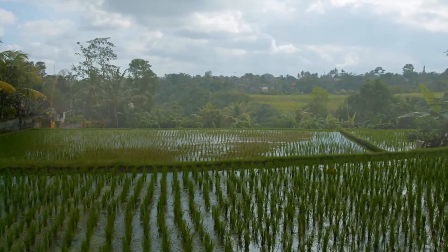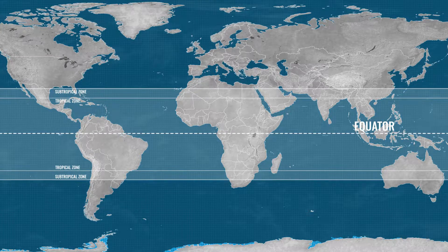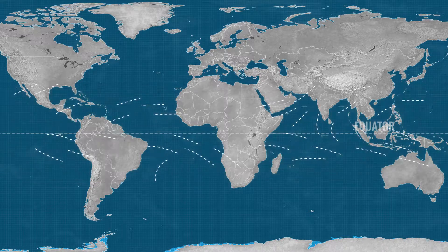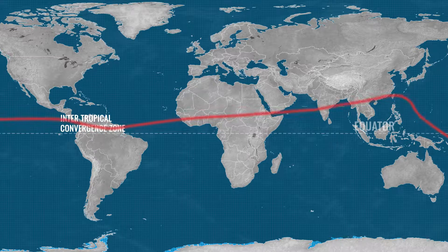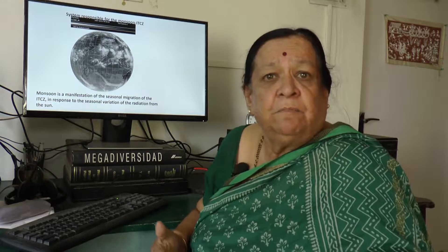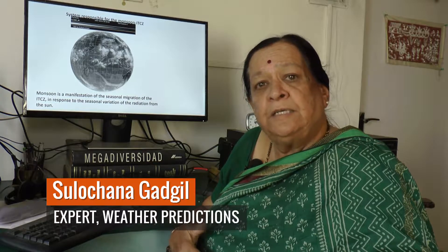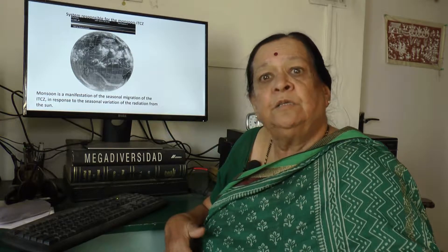Let's move this from theory into practice. Monsoons occur in the tropical and subtropical regions on either side of the equator. The trade winds meet in this region, creating a small band of low pressure around the equator known as the Intertropical Convergence Zone. Monsoon is in fact a manifestation of the seasonal variation of this ITCZ, and it comes to visit us every summer from the Southern Hemisphere and the Equatorial Indian Ocean, where it is in the winter.